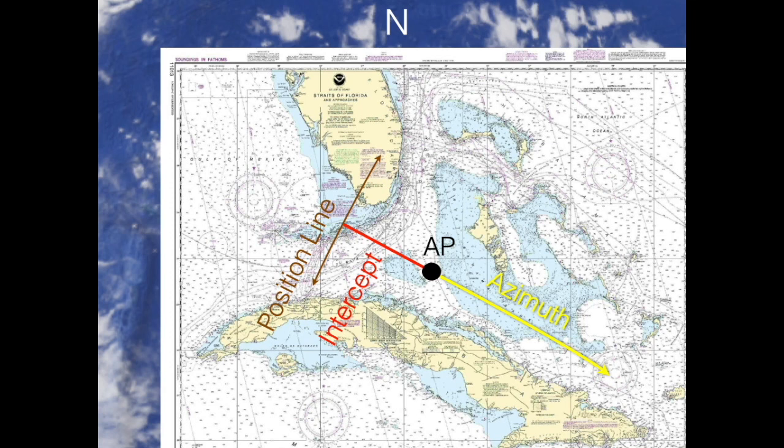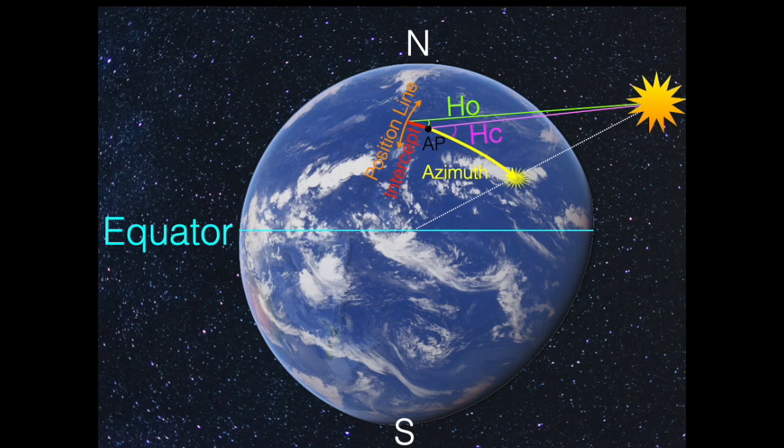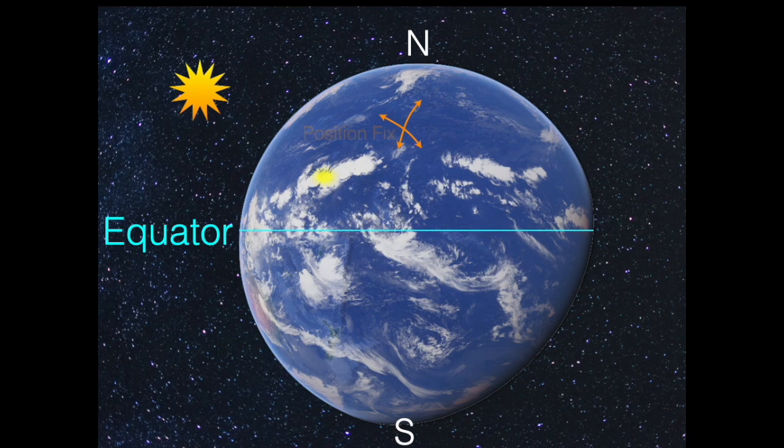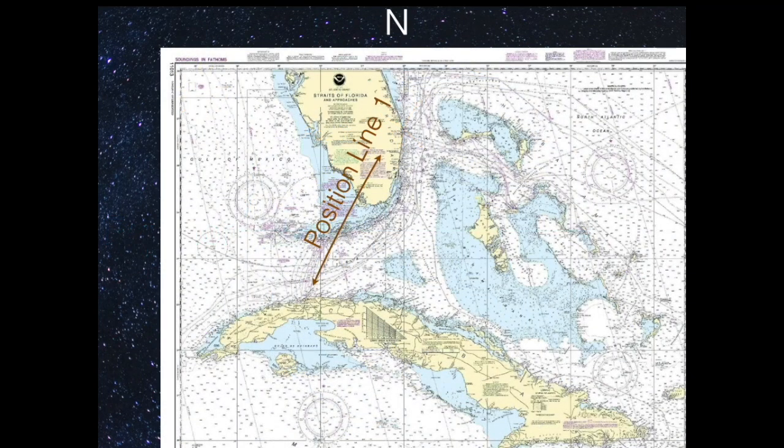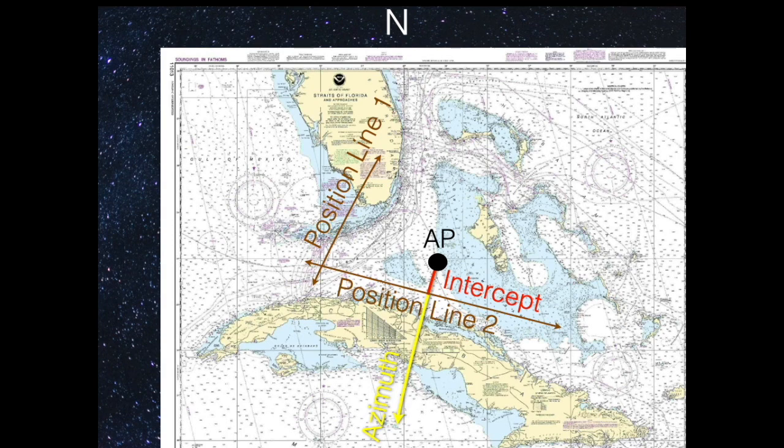Now only shooting at daytime and this moon maybe is not visible, that's not so easy. So we'll shoot the sun twice instead. So we shoot it in the morning we get a position line. We shoot it a couple of hours later we get a second position line. And where they intersect, where they cross, that's where we are. And if we have moved in between we just have to transfer the first position line accordingly.